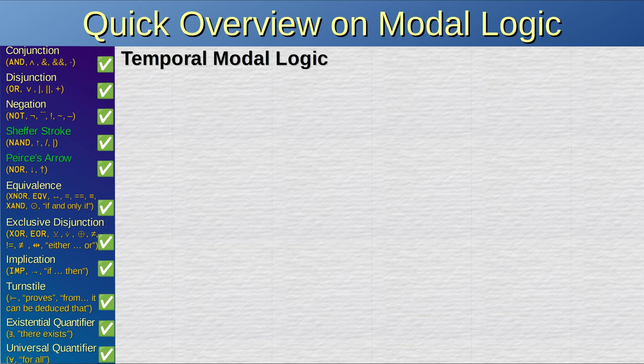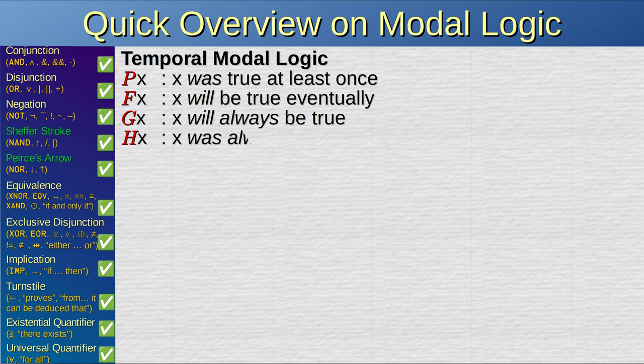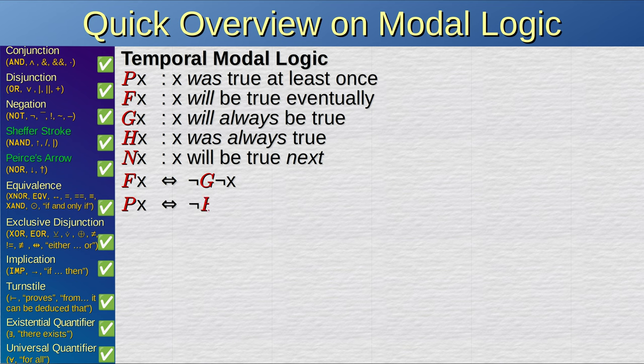In temporal modal logic, px means that x was true at some point. fx means that x will be true eventually. gx means that x will always be true. hx means that x was always true. nx means that x will be true next. If and only if x will be true, then it is false that x will always be false. If and only if x was true, then it is false that x was always false.